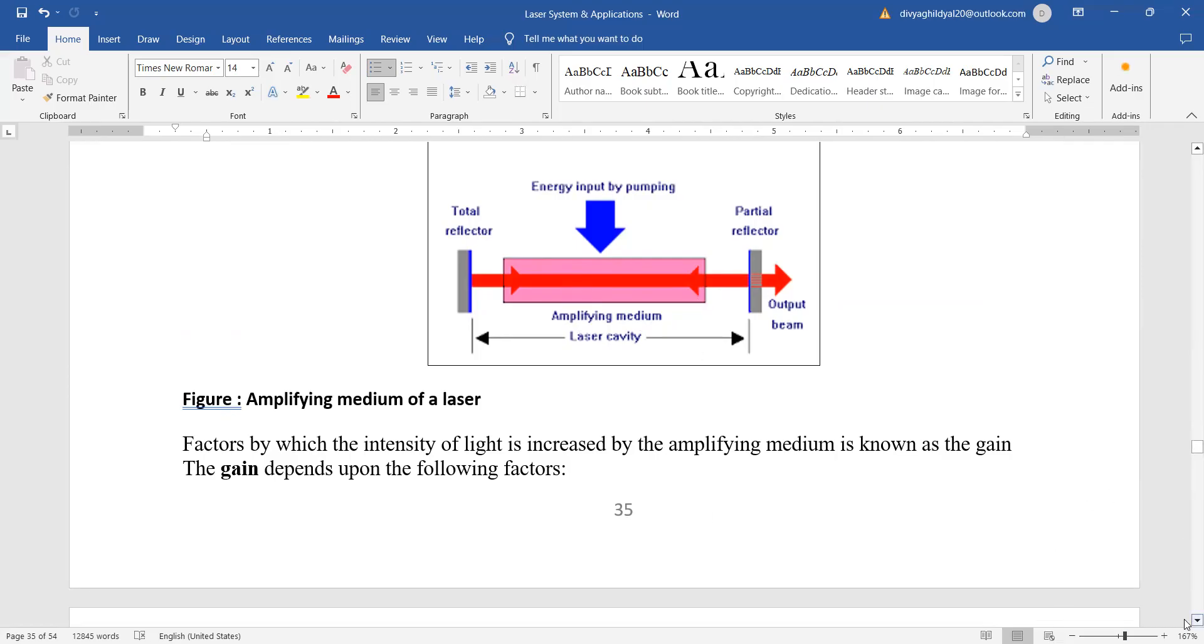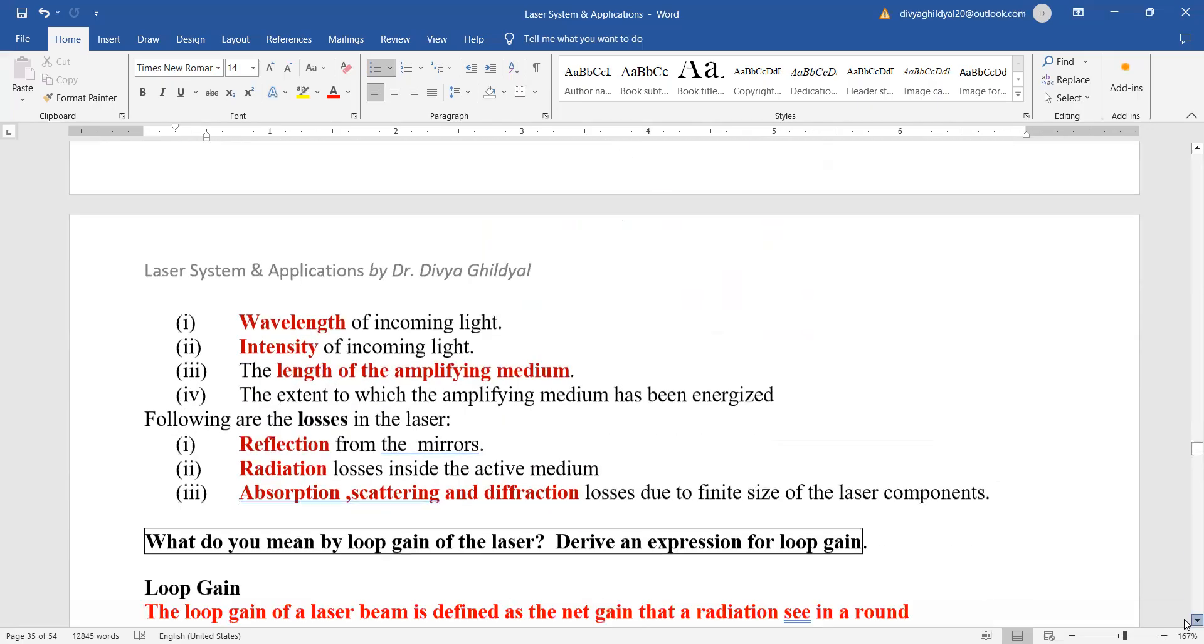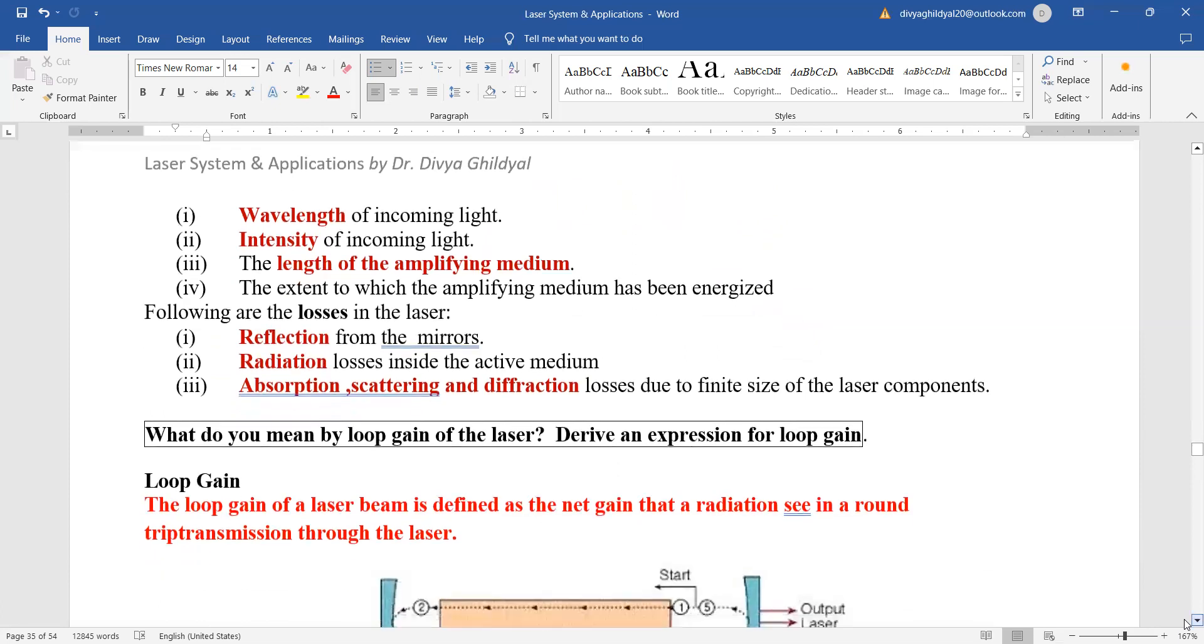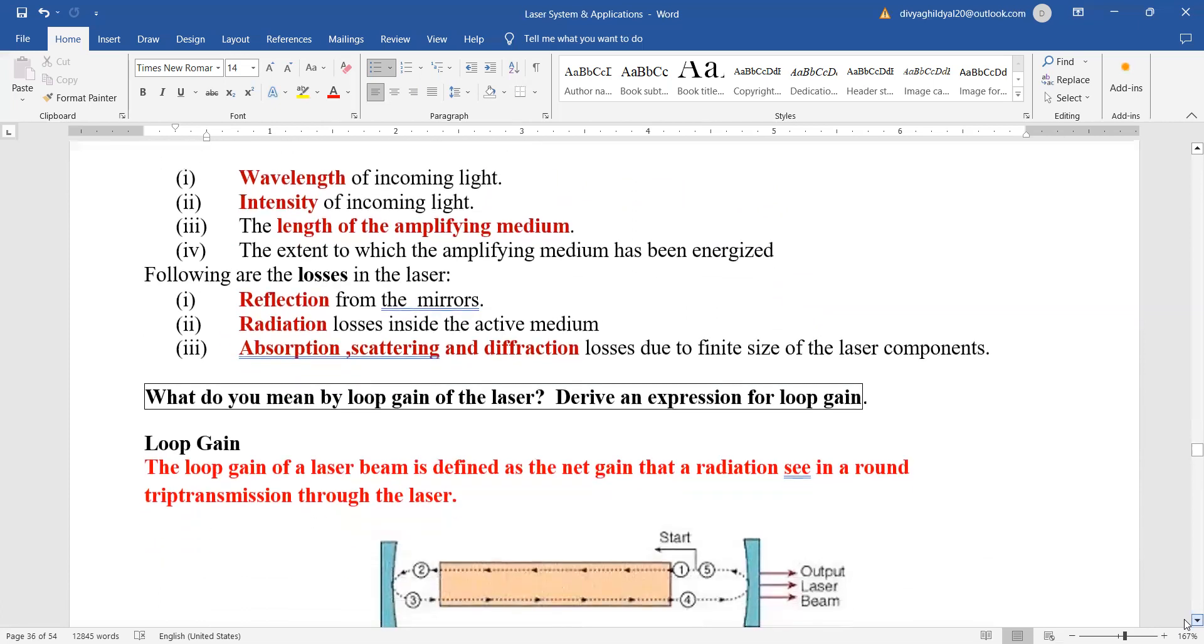Gain, what factors does gain depend on? If you look at this diagram it will be clear. It depends upon the wavelength of incoming light, intensity of incoming light, length of amplifying medium, and the extent to which the amplifying medium has been energized. What are the basic losses? Reflection of mirrors, radiation losses, absorption, scattering, and diffraction losses or any other optical phenomena losses.